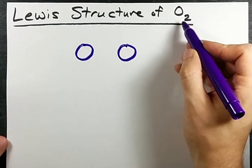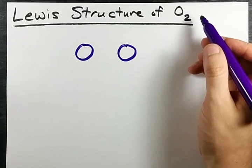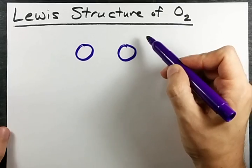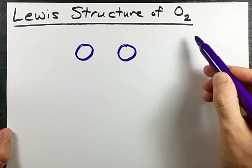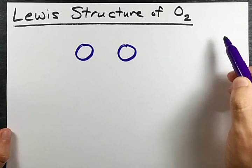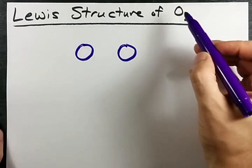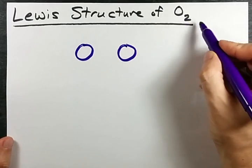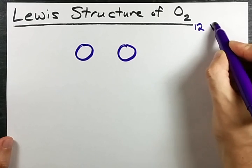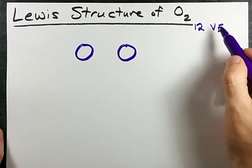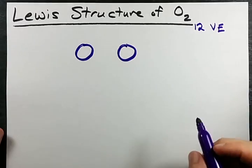Well, each oxygen brings six valence electrons with it because it's in group 16. Boron brings three, carbon brings four, nitrogen brings five, oxygen brings six. If each oxygen brings six, and there are two of them, that means we have 12 valence electrons total required in the structure.